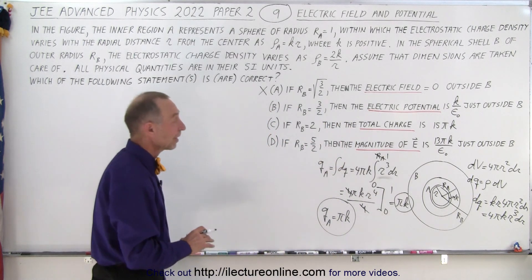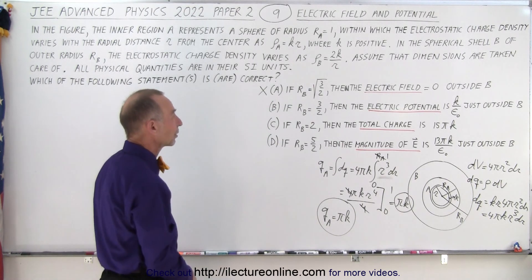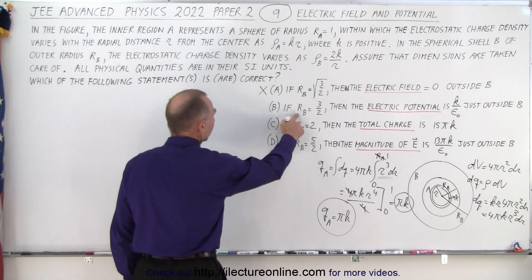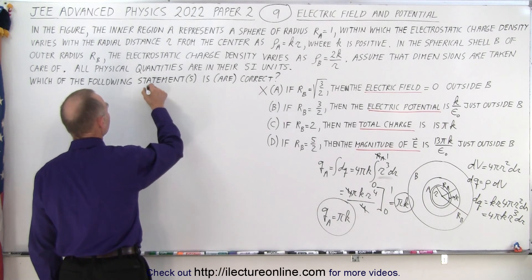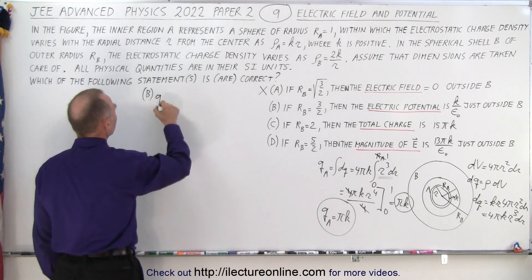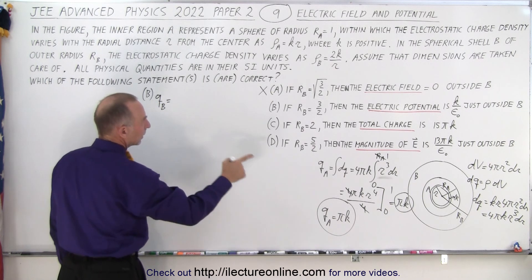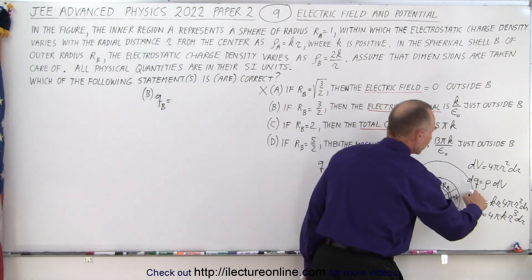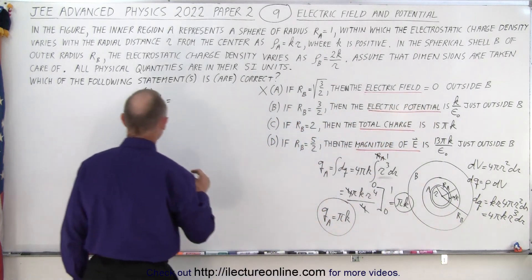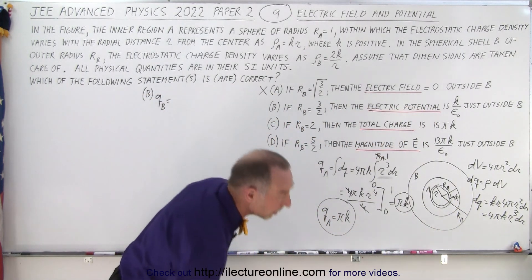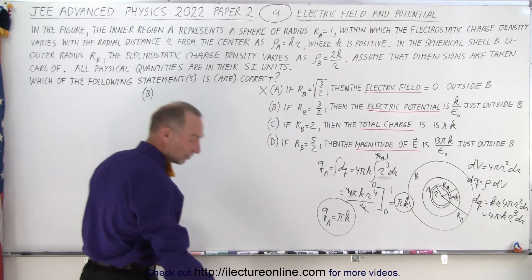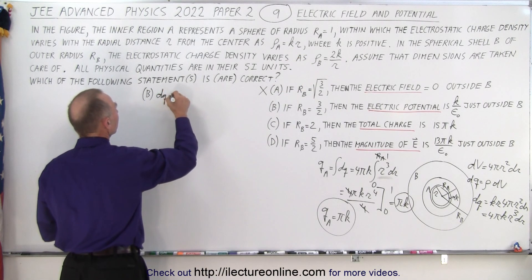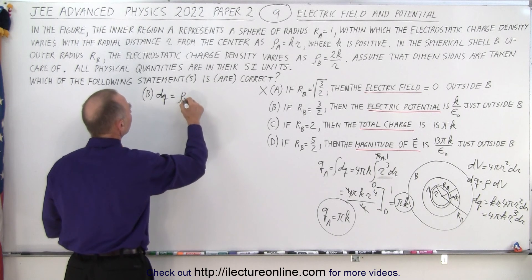Alright, so now we need to find charge in B for the other three configurations. And so let's start with the next one for part B. So we can say that q in B is equal to, well it would be the same thing again. Let's first recalculate our small little charge element, because it's going to be different, because the density for B is different than the density for A.